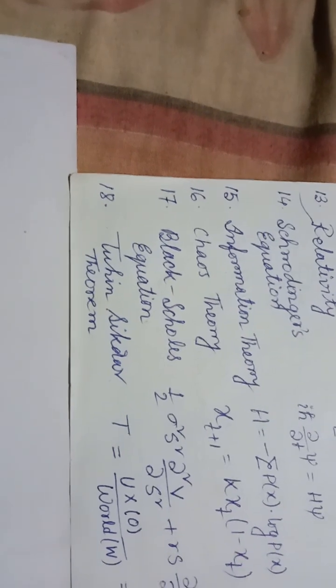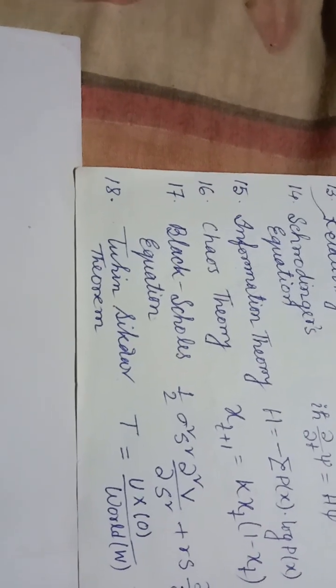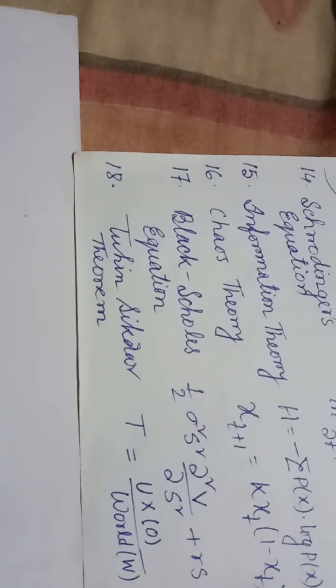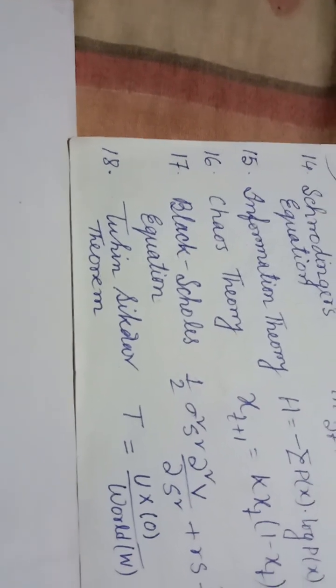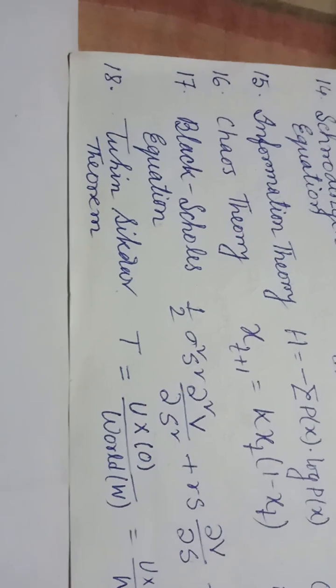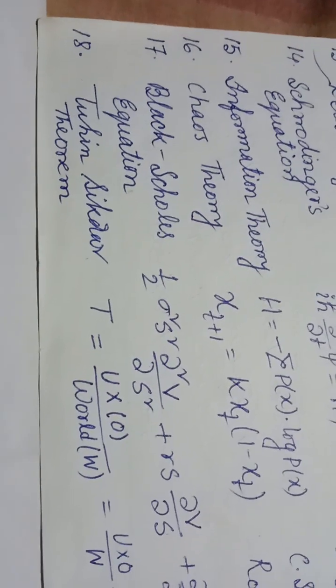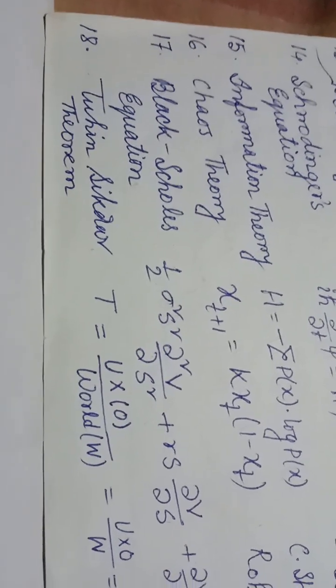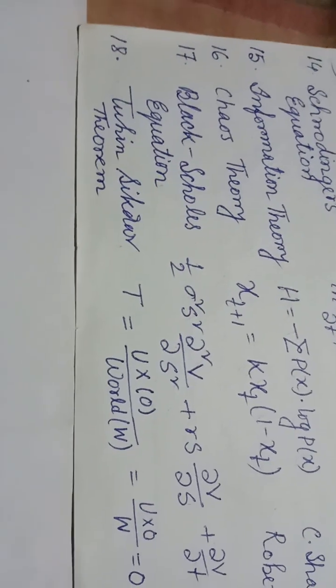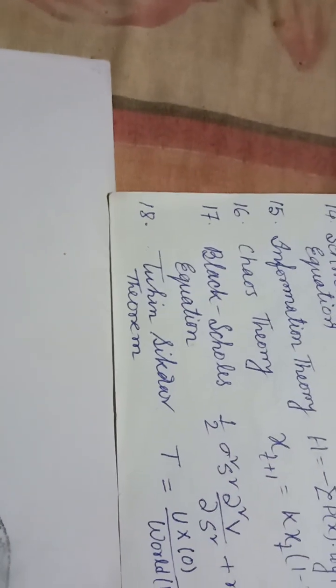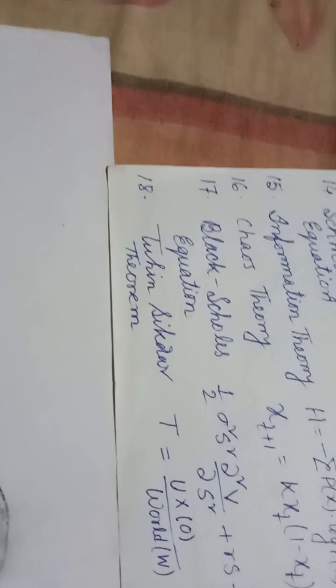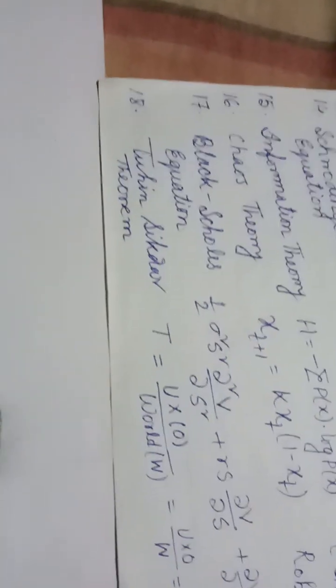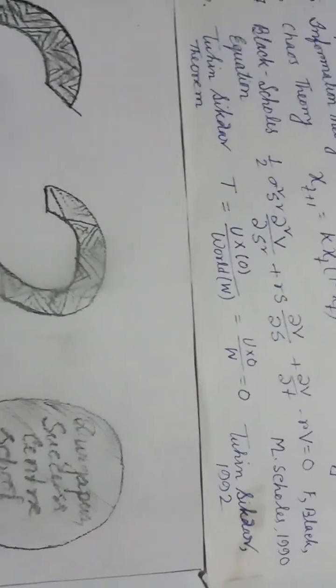Formula number 17, Black-Scholes: (1/2)σ²S²∂²V/∂S² + rS∂V/∂S + ∂V/∂t - rV = 0. F. Black, M. Scholes, 1990. Formula 18, Tuhin Sikdar Theorem: T = U × 0/world. Zero by world equals 0. Tuhin Sikdar, 1992, 2020.